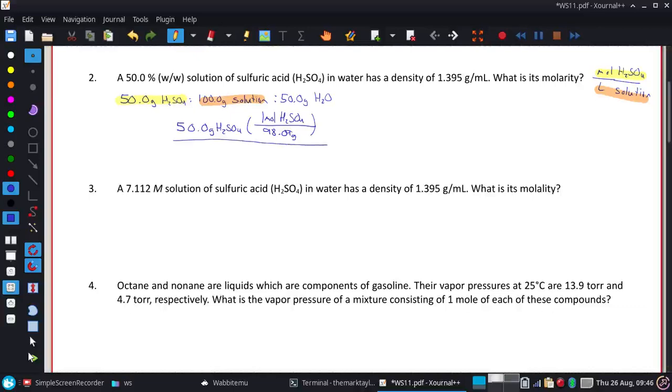For the denominator, since we want liters, we'll take the 100 grams of solution and change it to volume using the density, then convert to liters with a unit conversion.